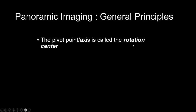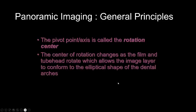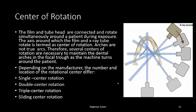The pivot point or axis is called the rotational center. The center of rotation changes as the film and tube head rotate, which allows the image layer to conform to the elliptical shape of the dental arches. Because dental arches are not true arcs, several centers of rotation are necessary to maintain the arches within the focal trough. Depending on the manufacturer, the number and location of rotational centers differ — it can be a single, double, triple, or sliding moving center rotation.